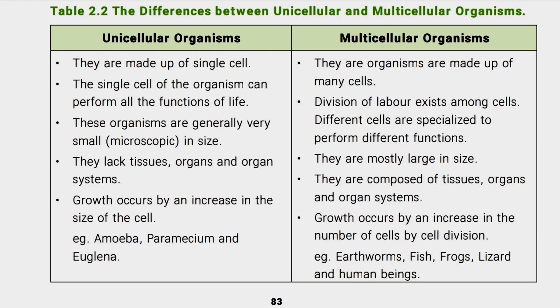Examples of unicellular organisms are Amoeba, Paramecium, and Euglena. Examples of multicellular organisms are fish, lizard, and human beings.